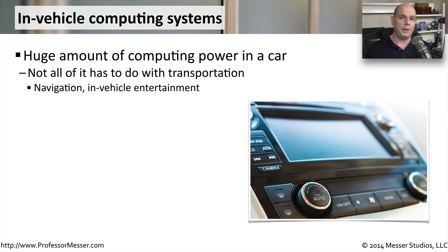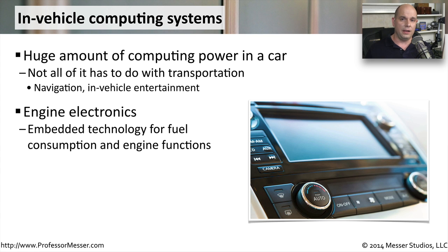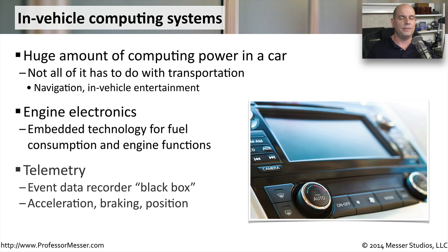There is an amazing amount of computing power within our automobiles. We've had computers in our engines for years, and these days the technology extends to satellite radio, entertainment units, and GPS systems. It's not uncommon to have multiple computers managing different systems inside your engine, and you can take your car in for a firmware upgrade to improve performance or fuel consumption. There is also telemetry being maintained — data recorders inside your systems record speeds and locations traveled. We are starting to see the legal ramifications of this, as this data is now being used for accident reports to show exactly what was happening to a vehicle at a particular time.